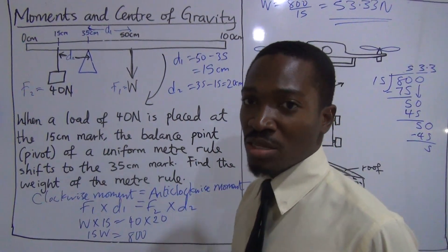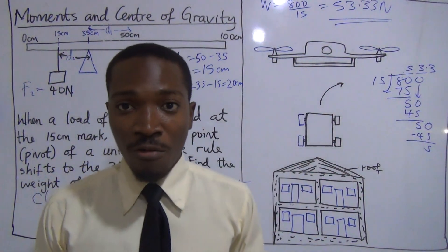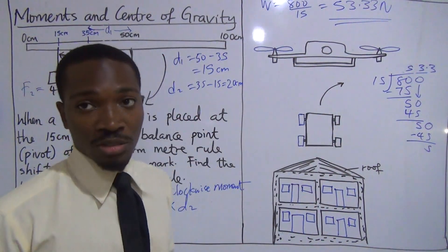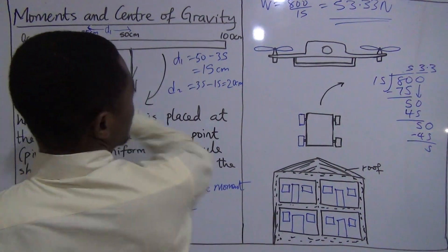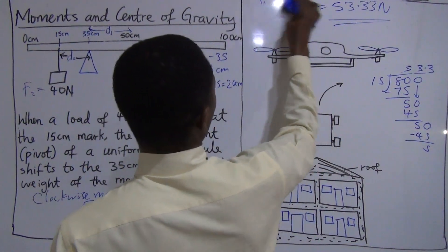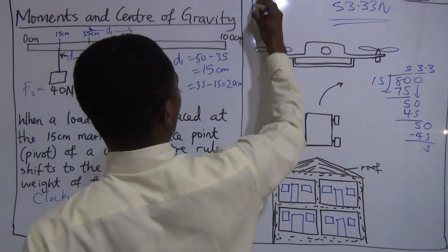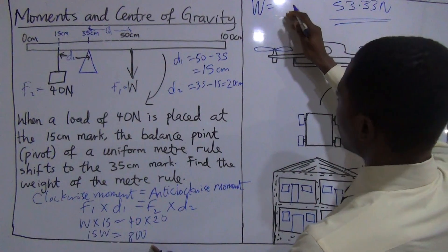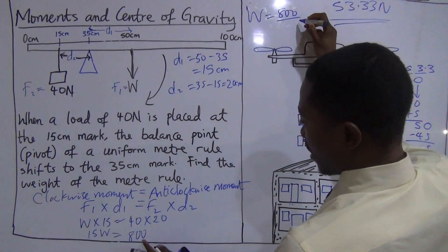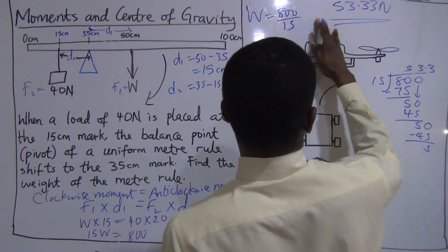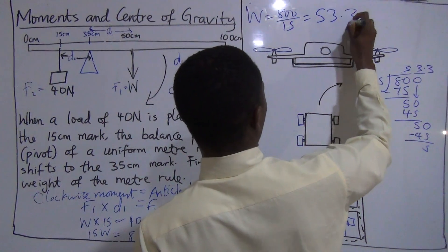That means the weight of the metal rule is 53.33 newton. This is how you can use the experimental method to determine the weight of an object. The weight of the rule is equal to 800 divided by 15, and that will give us 53.33 newton.